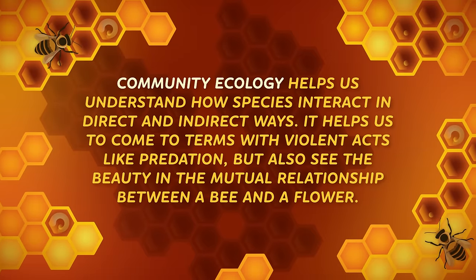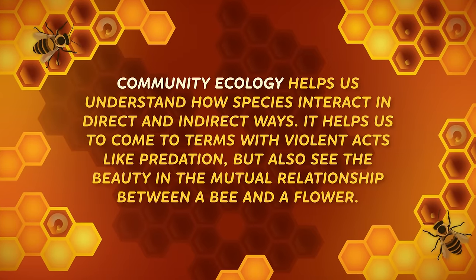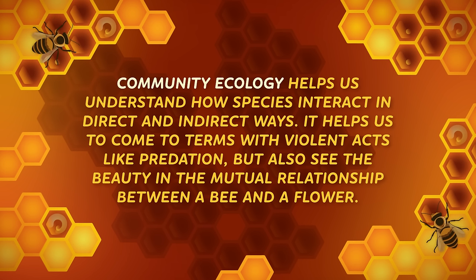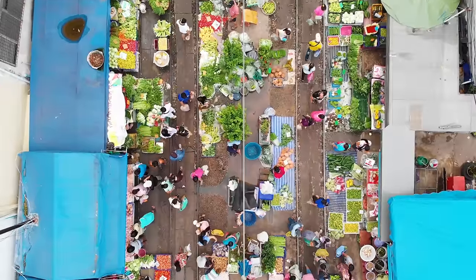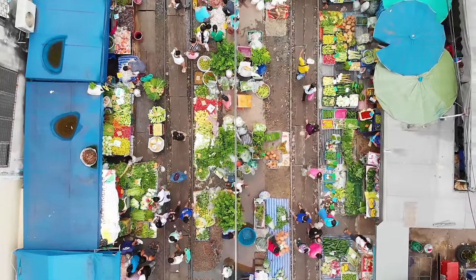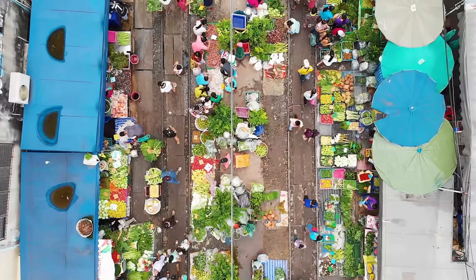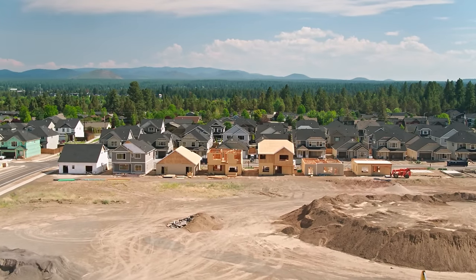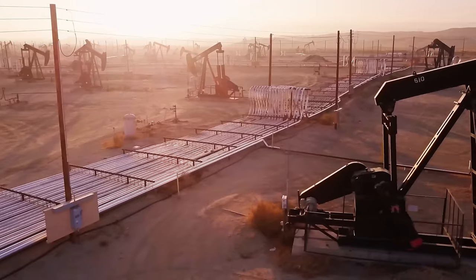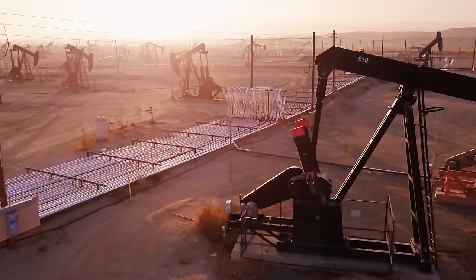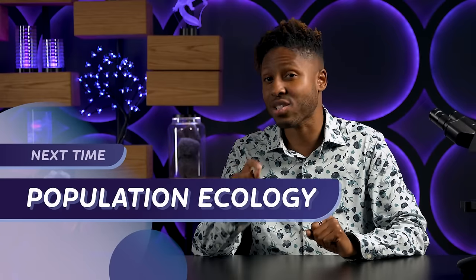Community ecology helps us understand how species interact in direct and indirect ways. It helps us to come to terms with the violent acts like predation, but also see the beauty in a mutual relationship between a bee and a flower. And like in Dr. Agrawal's radish plant study, it can reveal ways that interactions between species can lead to evolutionary changes through generations. And of course, we humans are a part of these communities as well. We might not always realize it, but every day, we interact with different species in our communities.